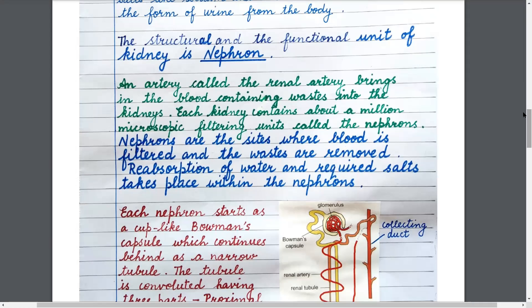The structural and functional unit of the kidney is the nephron. Each kidney contains about a million microscopic filtering units called nephrons. Nephrons are the sites where blood is filtered, waste is removed, and reabsorption of water and required salts takes place.